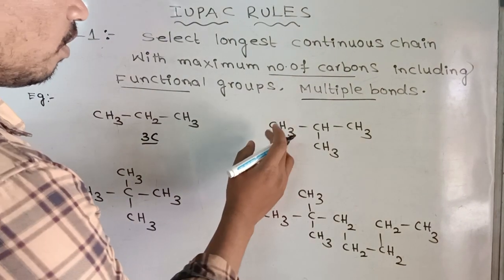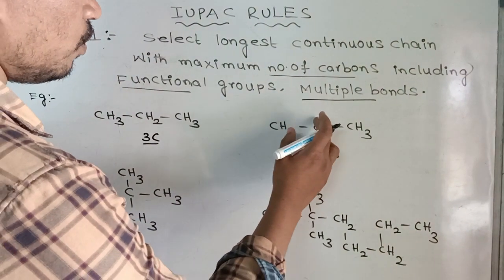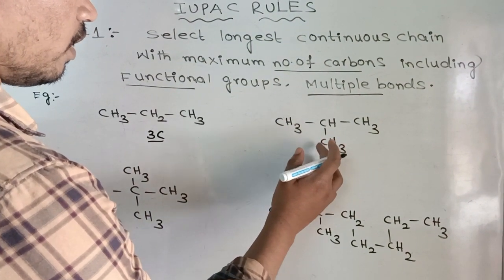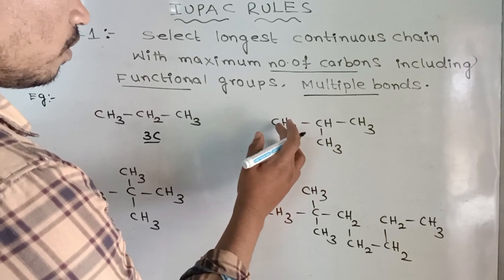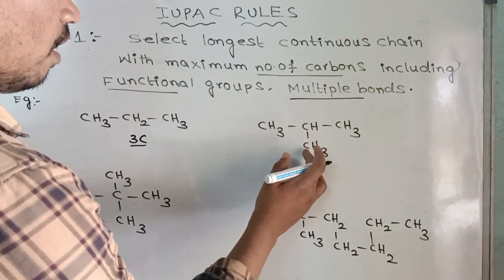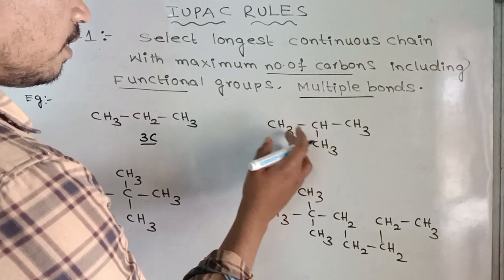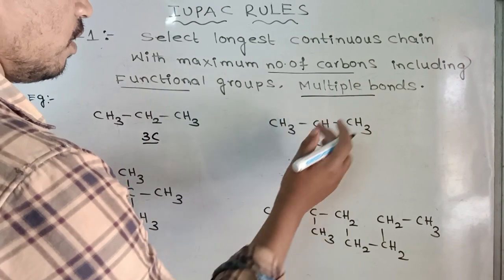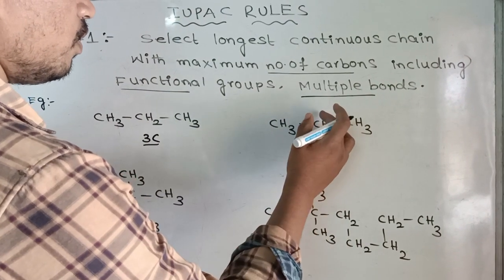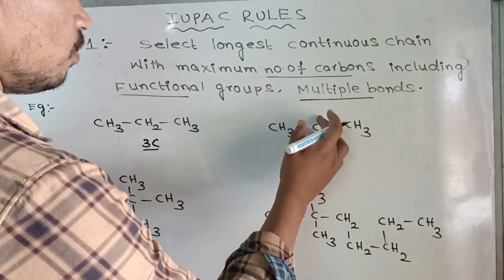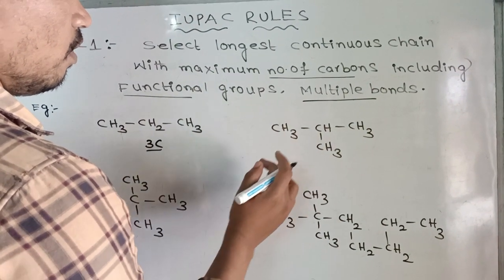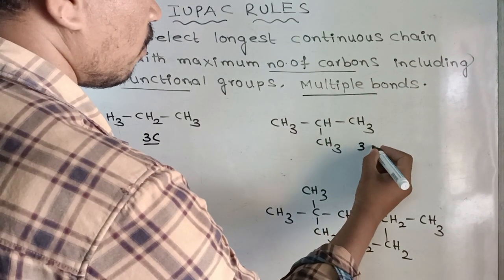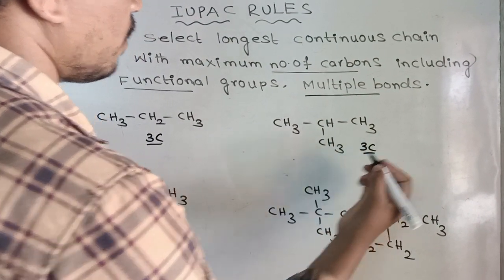In the second example, counting gives 1, 2, 3. You should not give the 4th number to this carbon because we are discontinuing the chain. So this molecule also has a maximum number of carbons of 3 only.